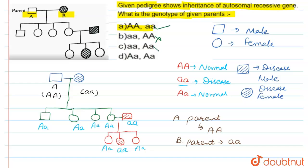Option two is wrong. Option three is also wrong. Option four is also wrong. Why? Because in option four they are having the same genotype — if same, then no disease. This one is also no disease. Why? Because this one is a heterozygous condition, just opposite to disease. So the genotype is capital A capital A for A and small a small a for B.